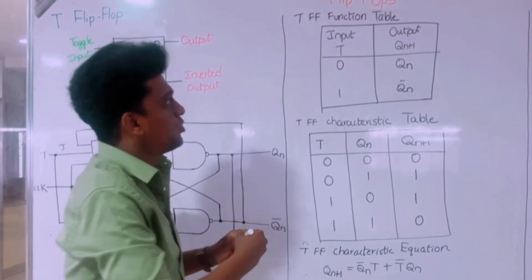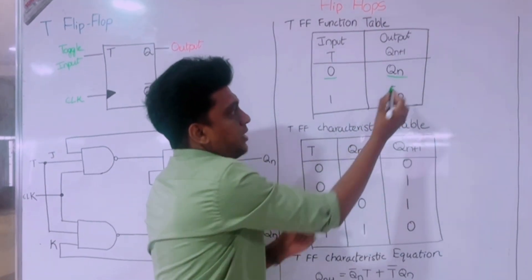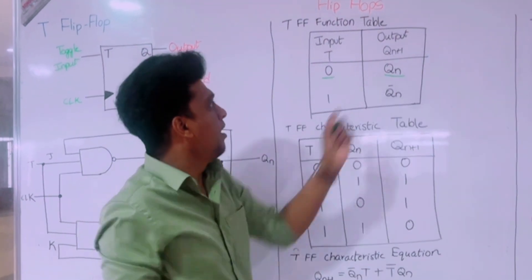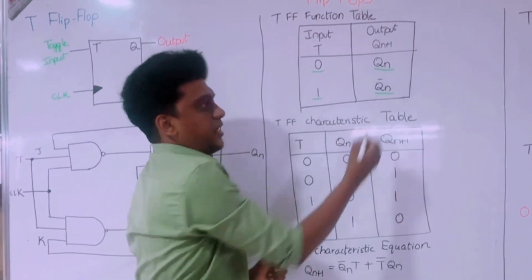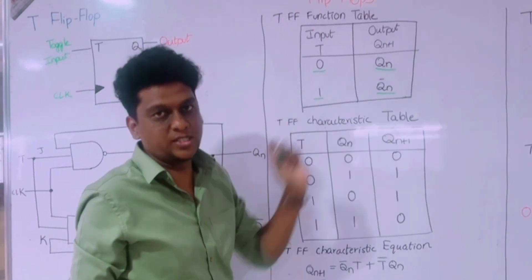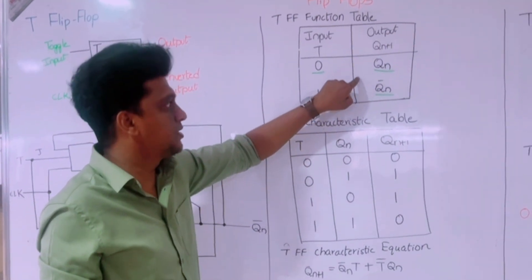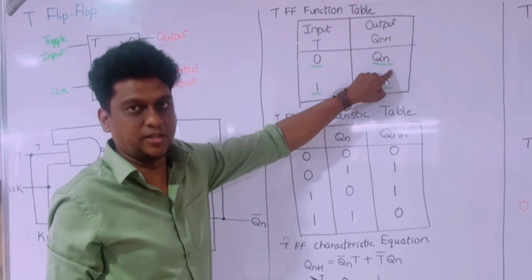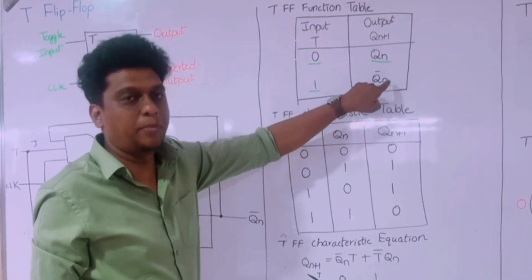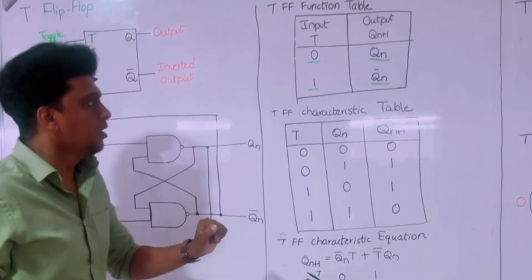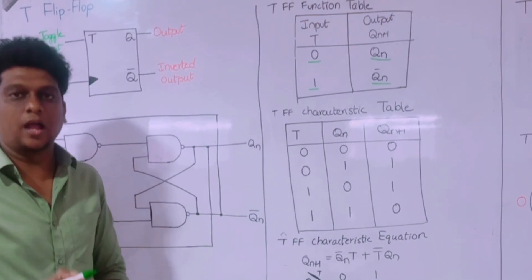This is the function table of the toggle flip-flop. For input equal to 0, we are getting the present state as the next state. And when the input is 1, we get the complement of the present state. Whenever the input is 0, whatever condition is in the present state comes directly to the next state. When the input is 1, whatever is in the present state, its complement will come. The toggle flip-flop helps in frequency divider circuits, shift registers, and counters.